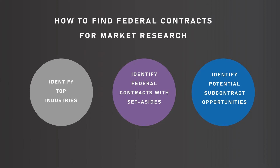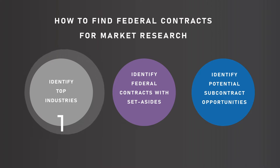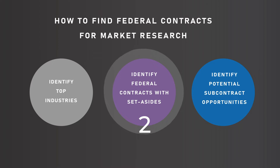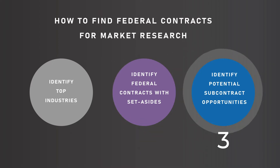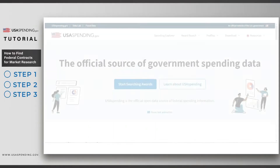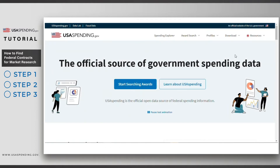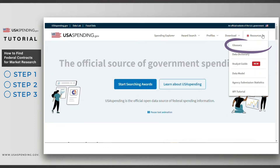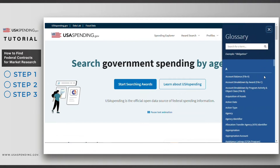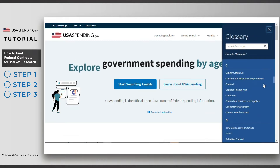We'll take three steps. First, we'll identify the top industries for federal contracts to small businesses in our state. Second, we'll identify federal contracts with set-asides. Third, we'll identify potential subcontract opportunities from recent contracts. As a reminder, if you are ever unsure of the terms used on the website, you can consult the glossary located under Resources in the main menu.